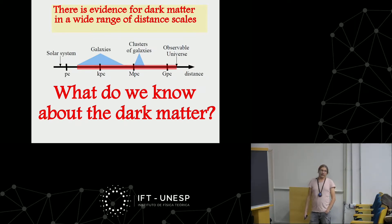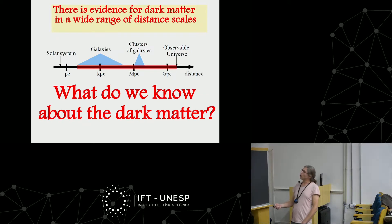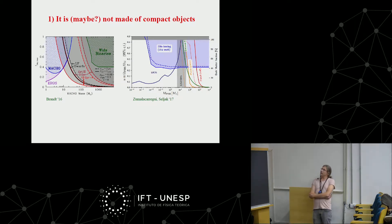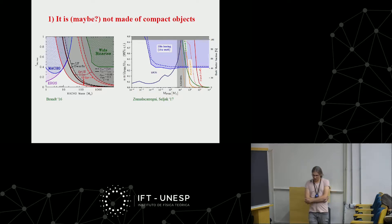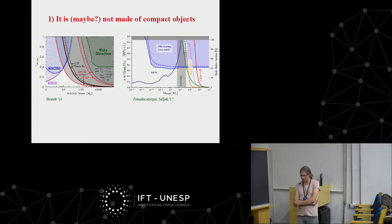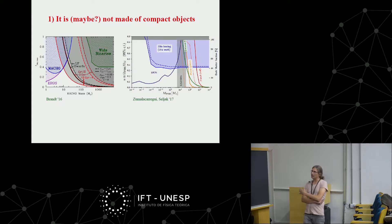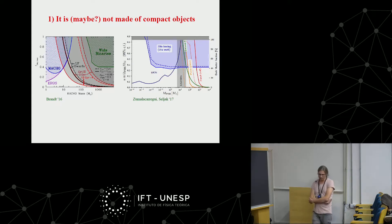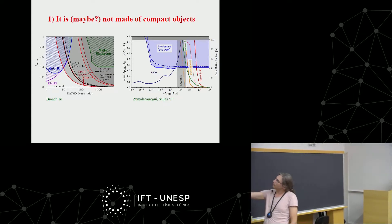What do we know about dark matter? The first item is a bit controversial: it is maybe not made of compact objects. One of the prime candidates in the 1960s–80s was that there were brown dwarfs or planets in our galaxy not visible because they are too faint. These come under the name of MACHOs — Massive Compact Halo Objects. The maximally allowed fraction of dark matter in the form of MACHOs is shown as a function of MACHO mass.